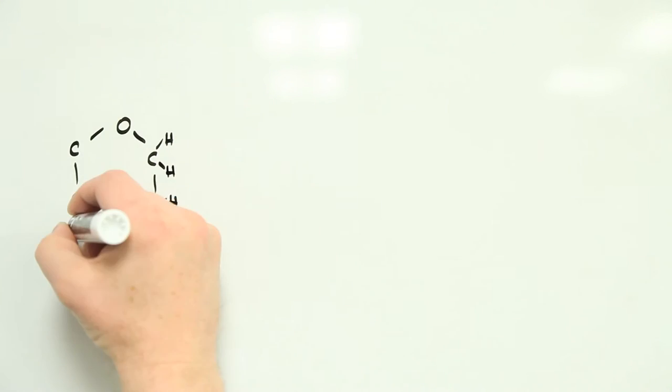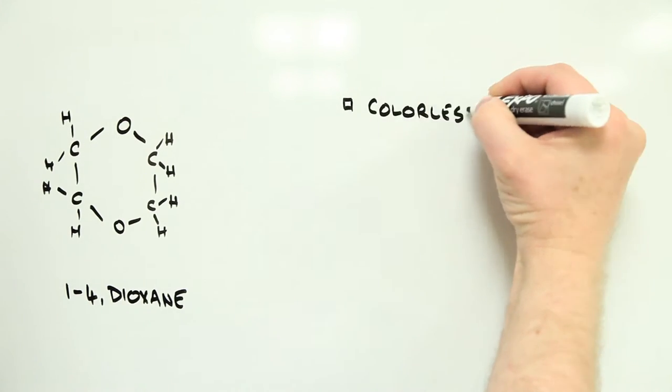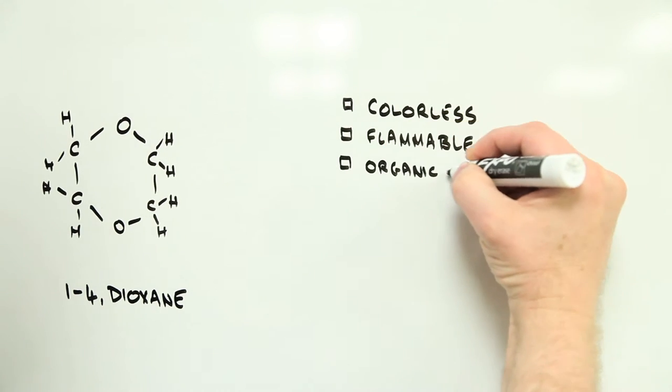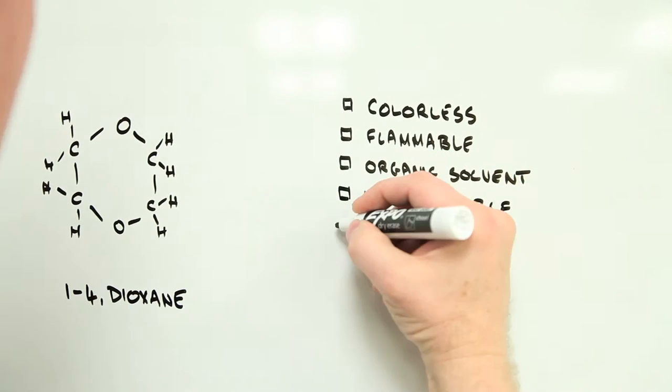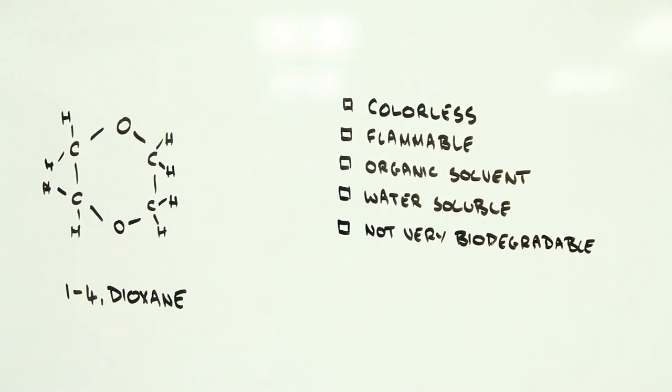1,4-dioxane, let's call it dioxane for short, is a colorless flammable liquid that's used as an industrial stabilizer and solvent. It dissolves readily in water and doesn't easily biodegrade, which is potentially a problem if it gets into the environment.